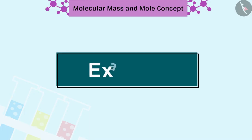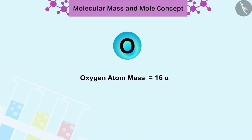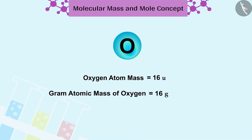Let us understand this in more detail by some examples. The oxygen atom has a mass of 16U. Therefore, the gram atomic mass of oxygen will be 16 grams.